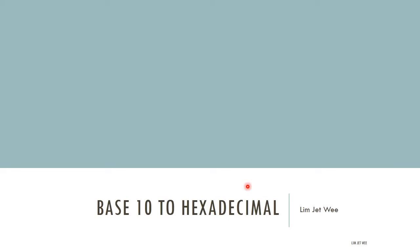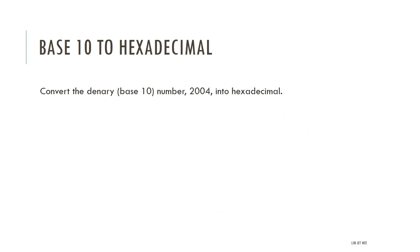We are going to cover the requirement for your assessment: converting a base 10 number to hexadecimal, or hex for short. Try this question first — you are given a base 10 number, 2004, which is two thousand and four, and you are supposed to convert it into the equivalent hexadecimal value. If you'd like to try this, pause the video now.